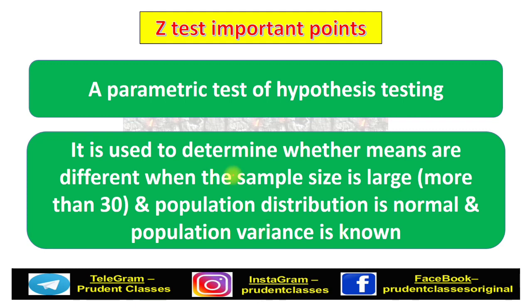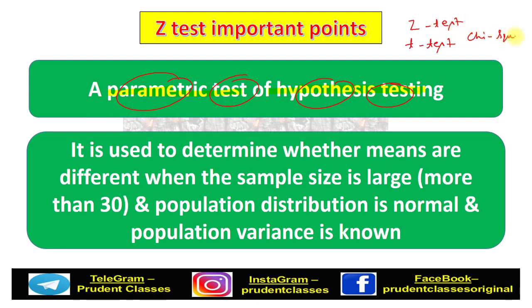First, let's understand some basic points about the Z-test. The Z-test is a parametric test through which we test a hypothesis. There are two types of tests: parametric and non-parametric. This is a parametric test. In your course, there are basically three types of tests on which questions come: T-test, Z-test, and Chi-square test.